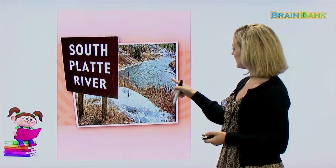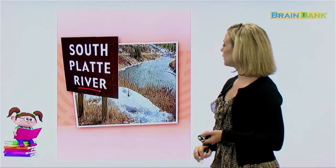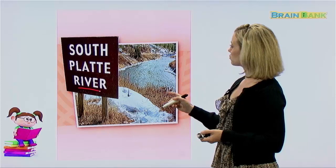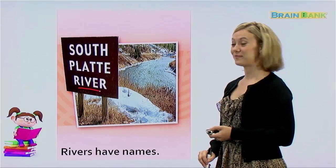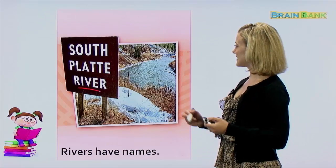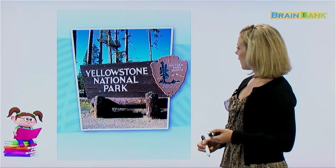Next, we have — not a mountain, but — what is this? Is it a swimming pool? No. Is it an ocean? No. This is a river. So even bodies of water have names. In this case, this river is called South Platte River. So we can say, rivers have names. Can we read it all together? Rivers have names. Yes, they do. And in this case, this river is called South Platte River. Rivers also have names.